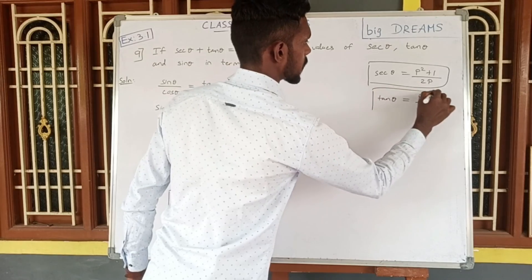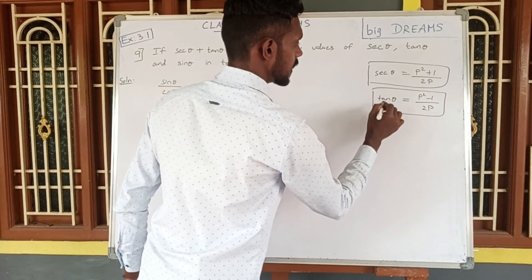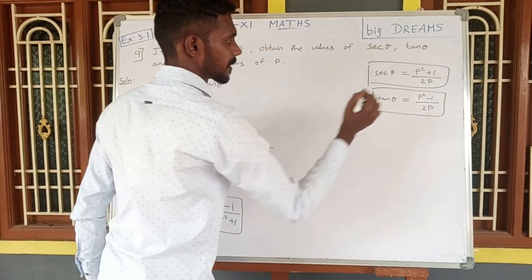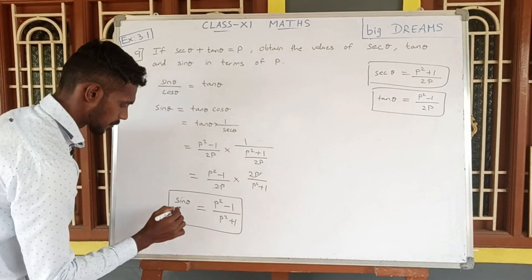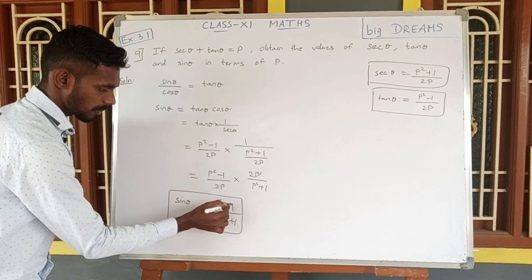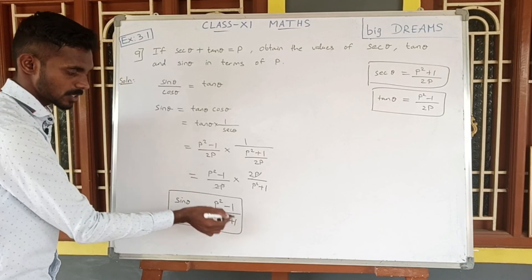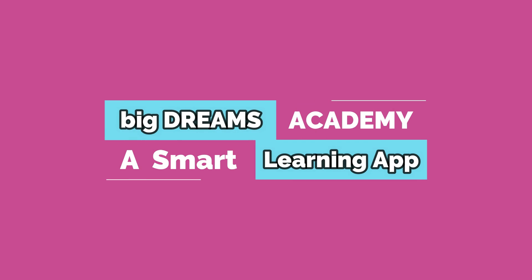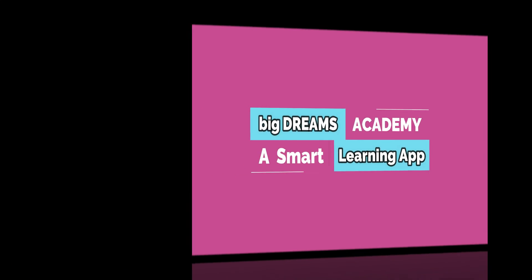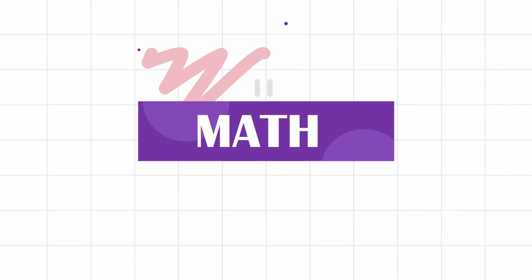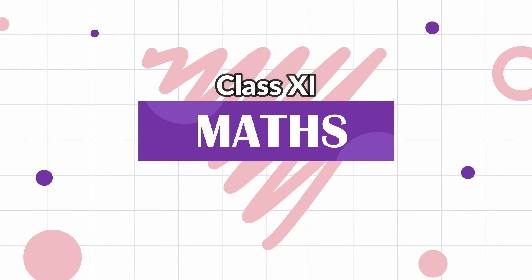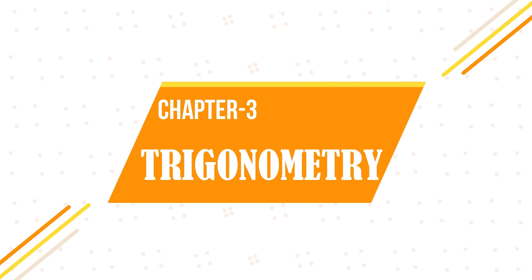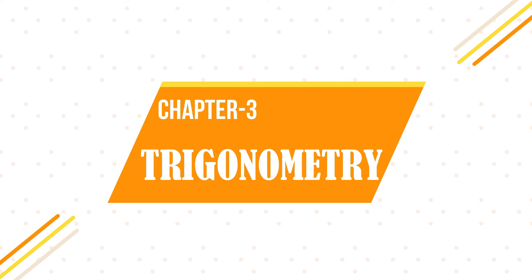Final answers: secant theta equals P squared plus 1 by 2P; tan theta equals P squared minus 1 by 2P; sin theta equals P squared minus 1 by P squared plus 1. Thank you.